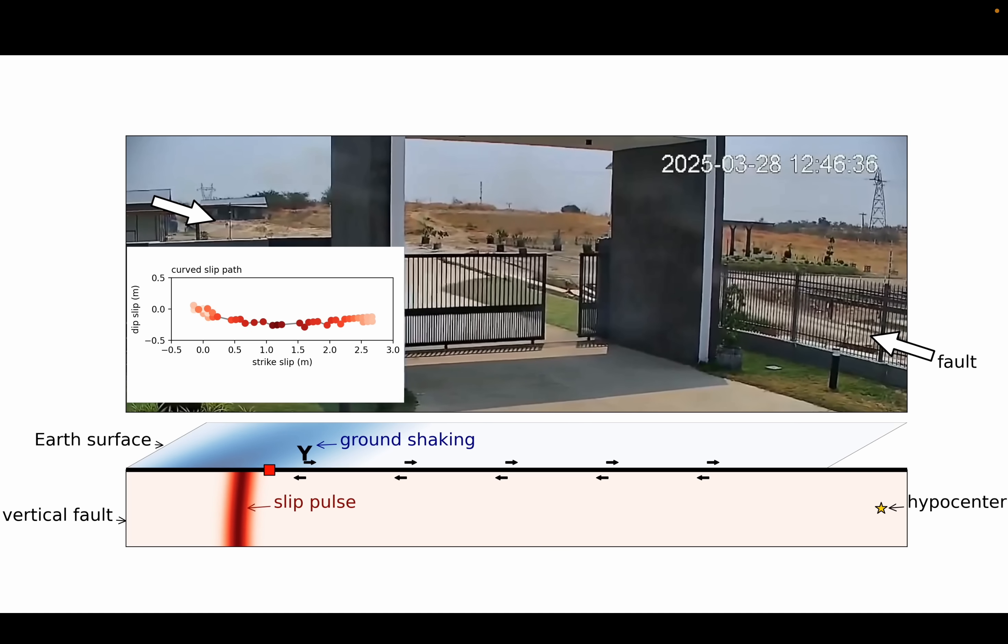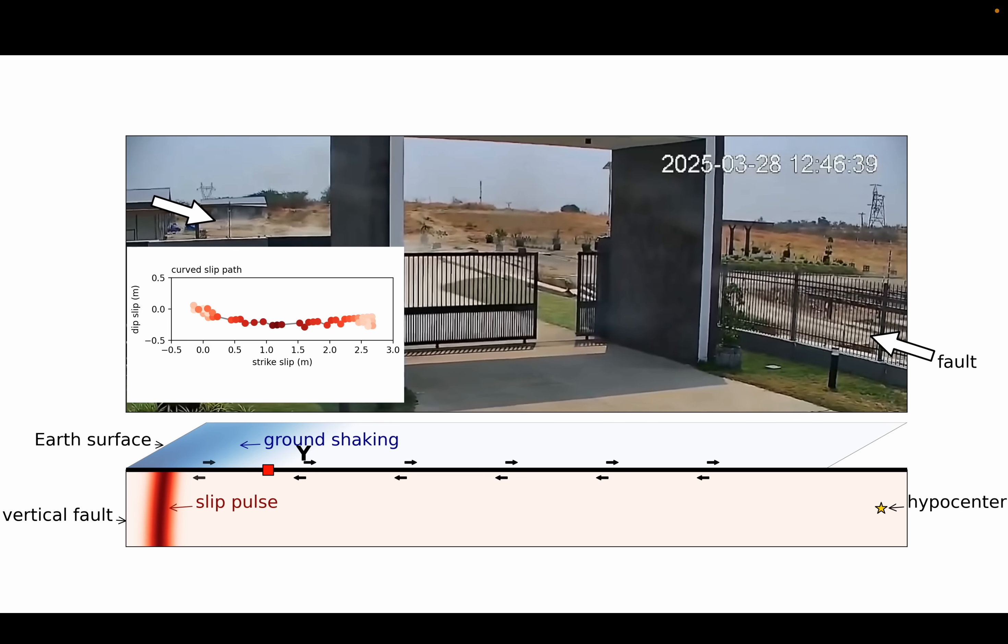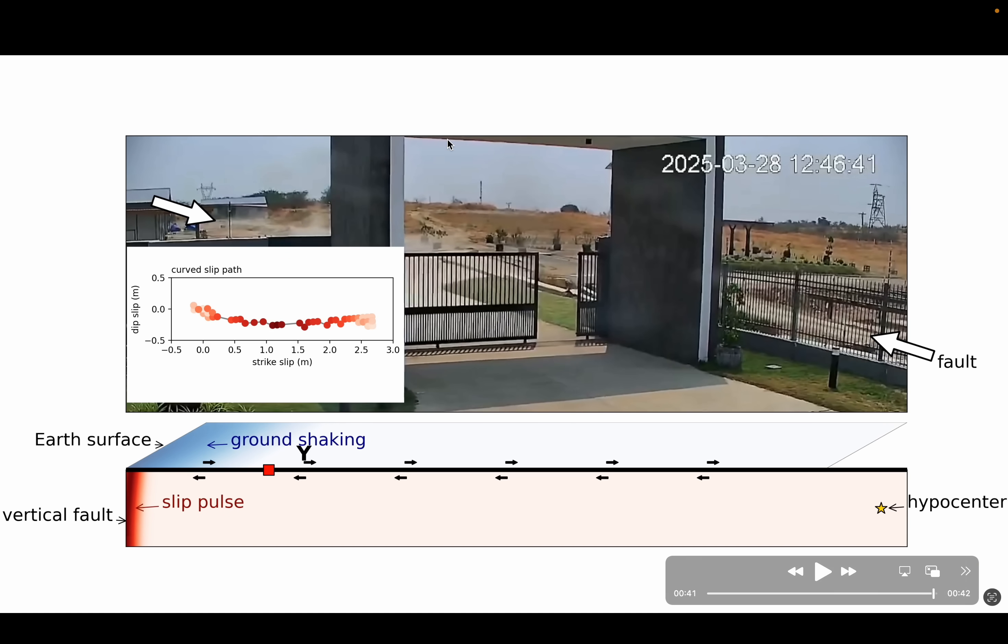did you see that? Did you see that subtle curvature that the fault took on its path? You can see that a bit more clearly here in this graph which shows you that curvature here.